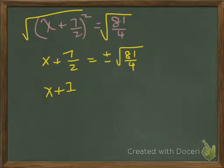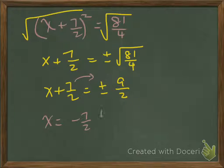So we have x plus 7 halves equals positive or negative 9 by 2. Now we're going to isolate x by subtracting 7 halves from both sides, and we end up with x equals minus 7 halves plus or minus 9 by 2.